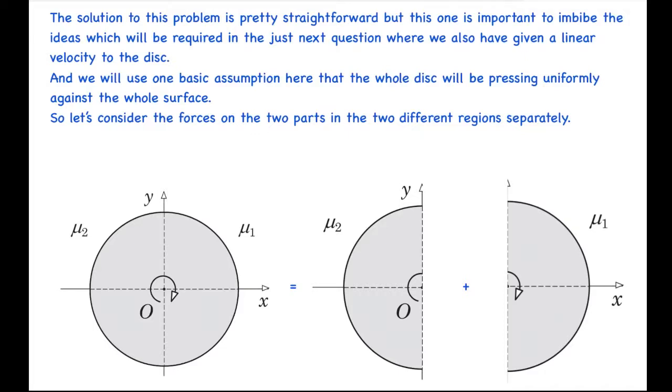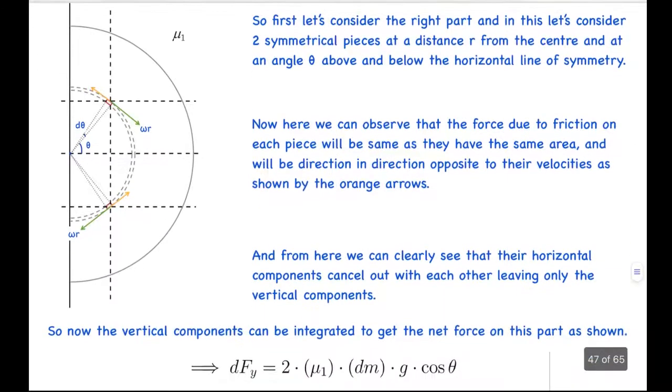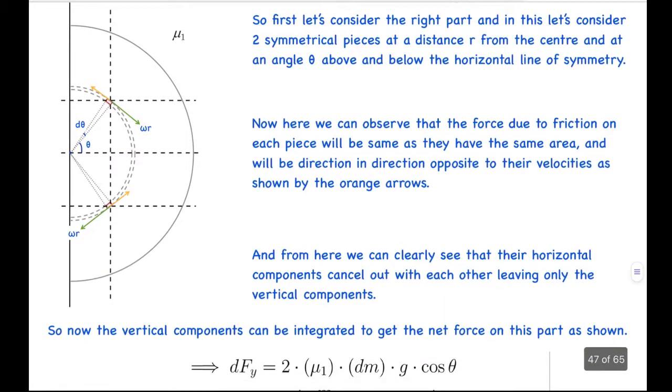We have basically considered this region which has coefficient of friction mu2 and this region which has coefficient of friction mu1 separately. So let's consider the right part first. So first let's consider the right part and in this let's consider two symmetrical pieces at a distance r from the center and at an angle theta above and below the horizontal line of symmetry.